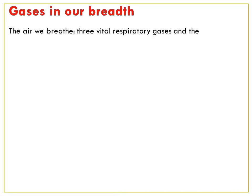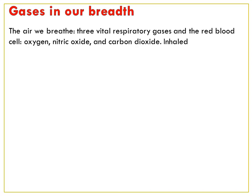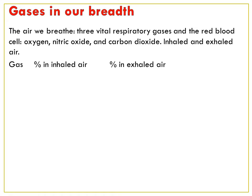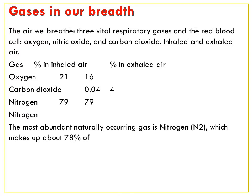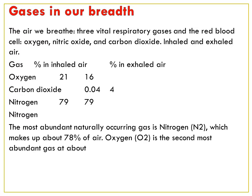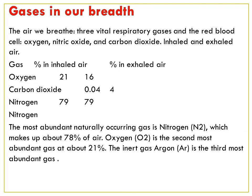Gases in our breath. We breathe, isn't it? What are the gases present? Which gases do we breathe in and breathe out? The air we breathe in contains 3 vital respiratory gases. Oxygen, nitric oxide, and carbon dioxide. Inhaled oxygen is 21%; exhaled is 16%. Carbon dioxide inhaled is 0.04% and exhaled is 4%. Nitrogen — 79% is taken in and 79% is given out. Nitrogen is the most abundant naturally occurring gas, making about 78% of air. Oxygen makes about 21% and is the most important gas. The inert gas argon is the third most abundant gas.